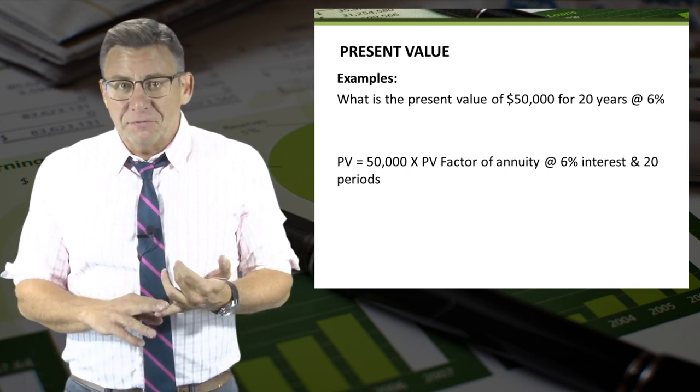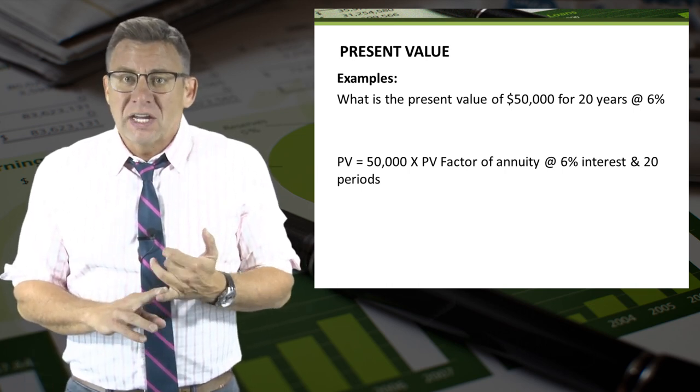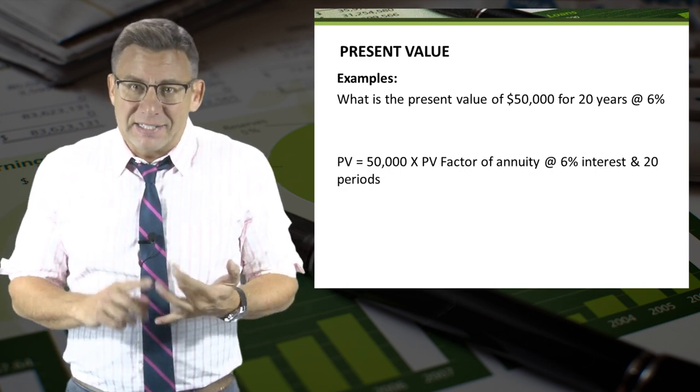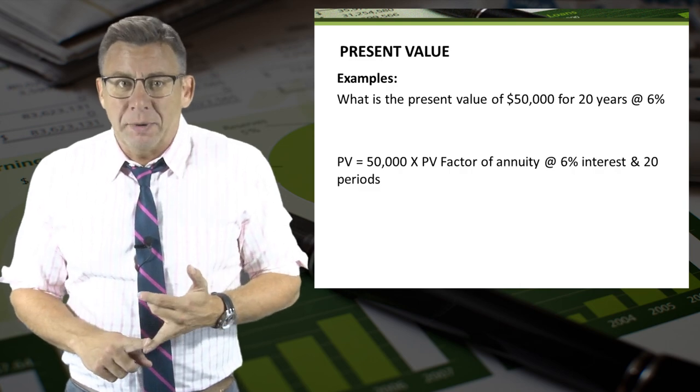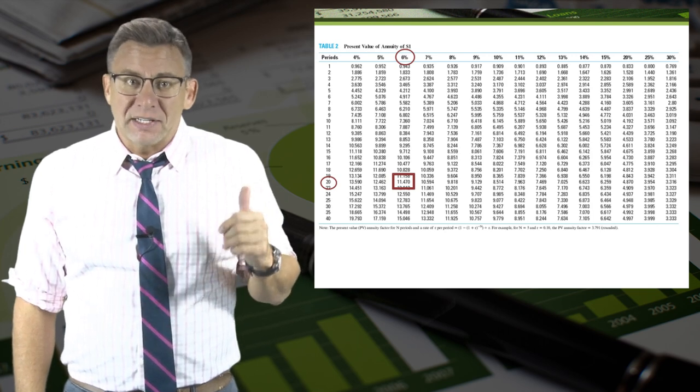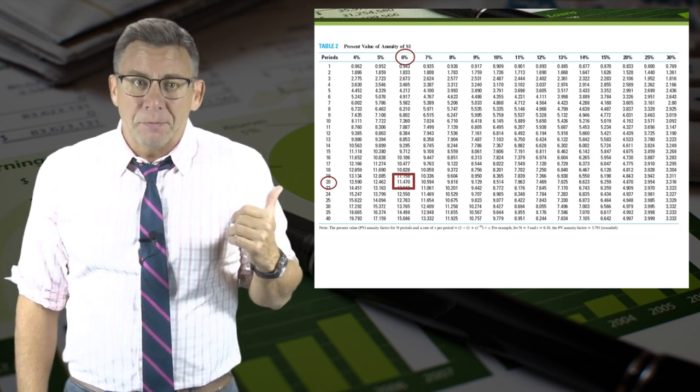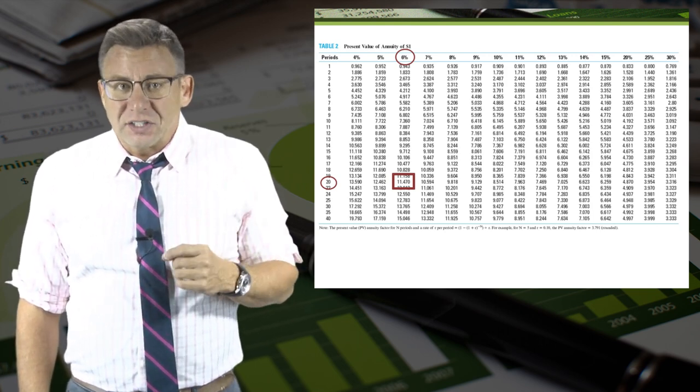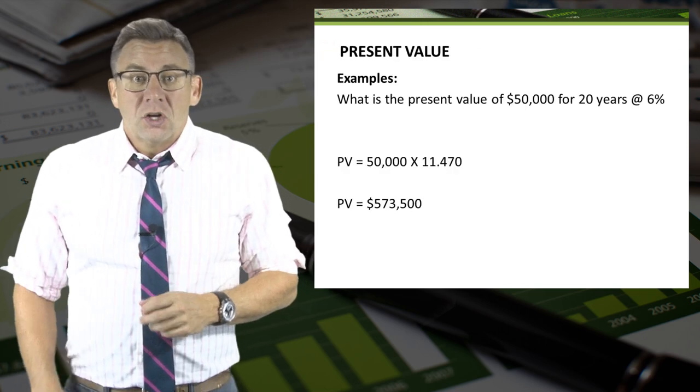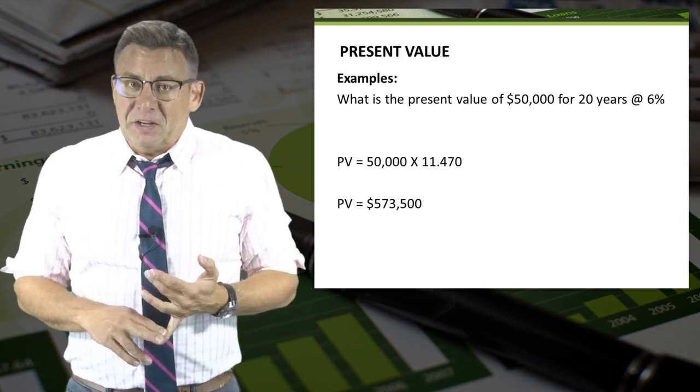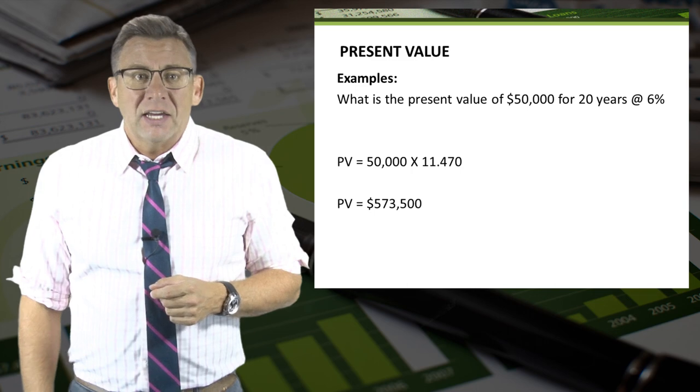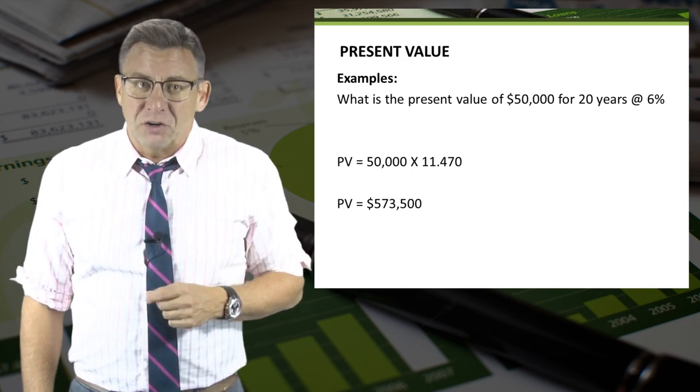The formula for present value equals $50,000 times the present value factor of an annuity at 6% interest and 20 periods. I've identified 6% and 20 periods on the present value of annuity table. Where they intersect is the present value factor of 11.470. So the present value of $50,000 for 20 years at 6% is $573,500.